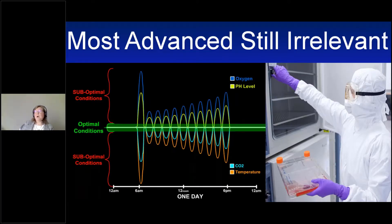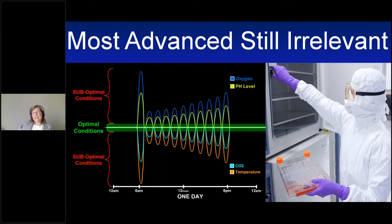Even in the most advanced cell culture labs in the world — even the cleanest clean rooms, the pinnacle of cell culture and cell production — you still have the same basic sources of variation that plague the crudest cell culture labs anywhere. Every time you open that incubator door, the CO2 changes, the pH changes, the temperature changes, the oxygen changes. It's even worse for cells in clean rooms because these rooms are kept cold because of all the layers people have to wear — making it essentially a people-centric environment, not cytocentric at all, and actually the worst place in the world you can put your cells.